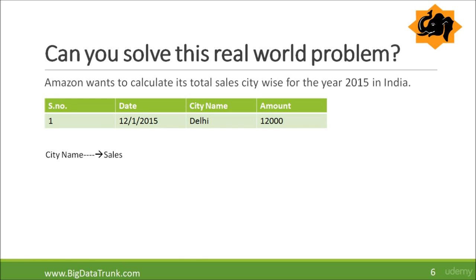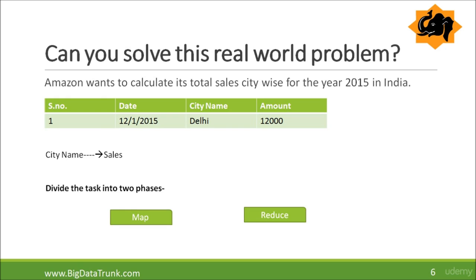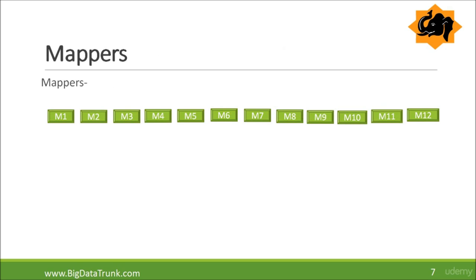In a MapReduce job, there are two phases: the Map phase and the Reduce phase. Rather than giving the task to one person, Amazon splits the whole data into chunks on the basis of months. So each mapper gets data of each month, giving us 12 mappers which work on it parallelly at the same time with small fractions of data.